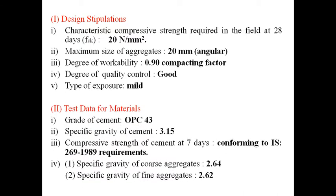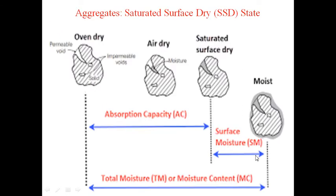Now, test data for materials. The grade of cement is ordinary Portland cement 43 grade. Specific gravity of cement is 3.15. Compressive strength of cement at 7 days confirms to IS 269:1989 requirements. Specific gravity of coarse aggregates is 2.64 and specific gravity of fine aggregates (sand) is 2.62. We are carrying out this mix design assuming that the coarse aggregates and fine aggregates are in saturated surface dry (SSD) condition.